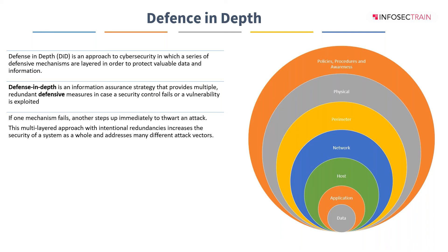Defense in depth assumes that attacks originate from outside and inside traffic should be trusted, but these days attacks can originate from inside as well. For example, a disgruntled employee who is not on good terms with management could cause harm. I remember one of my friends who was learning CCNA and ran a tool in the network which showed bandwidth of a switch — it created loops on the switch. He was not caught, but it shows that insider activity is a real possibility.